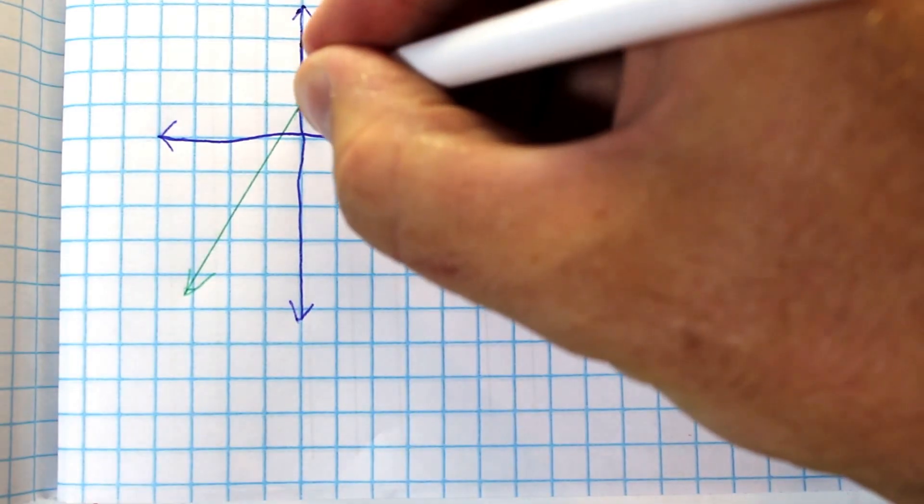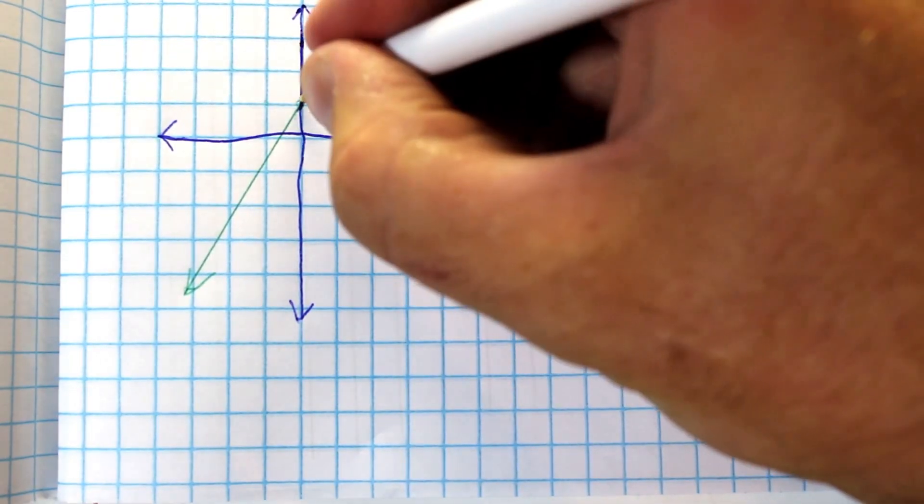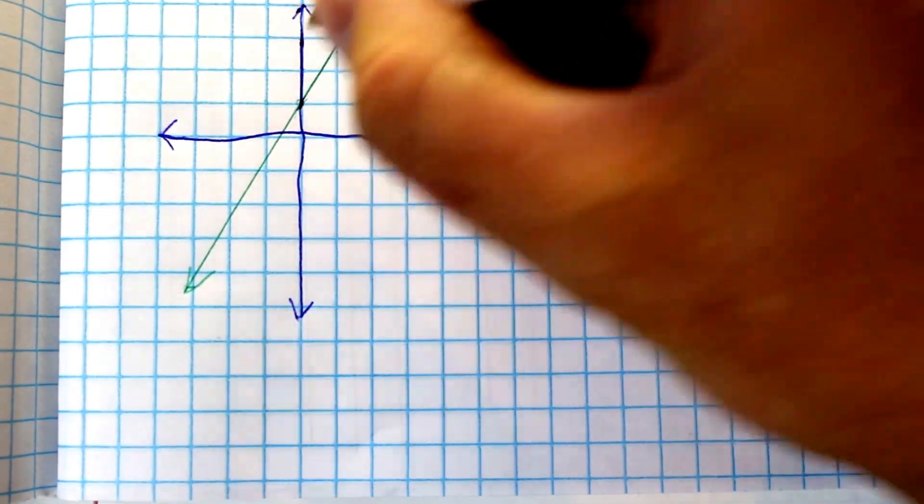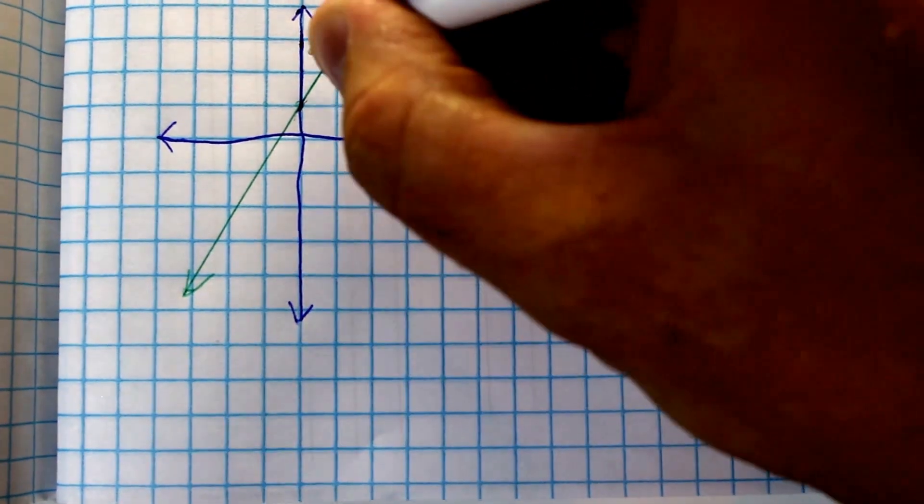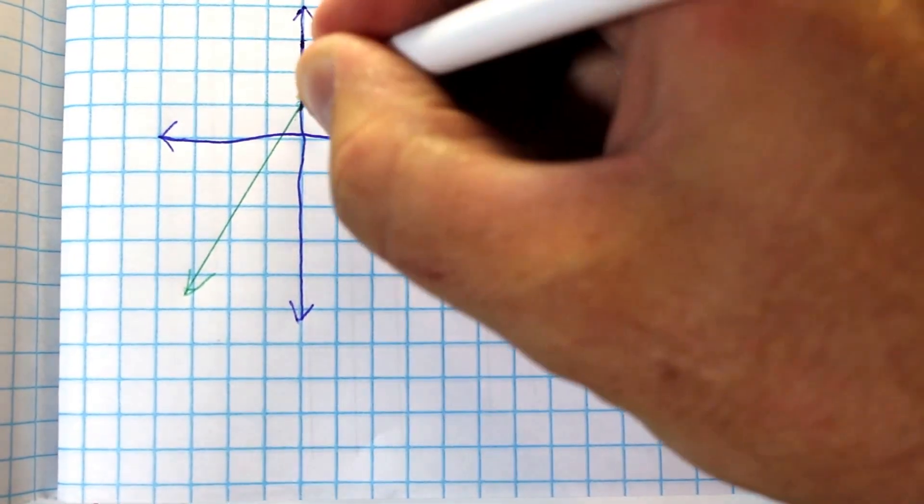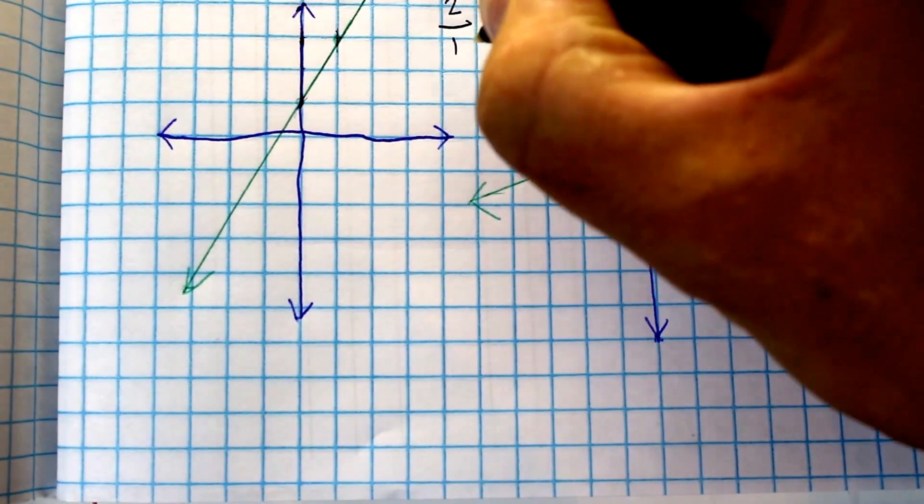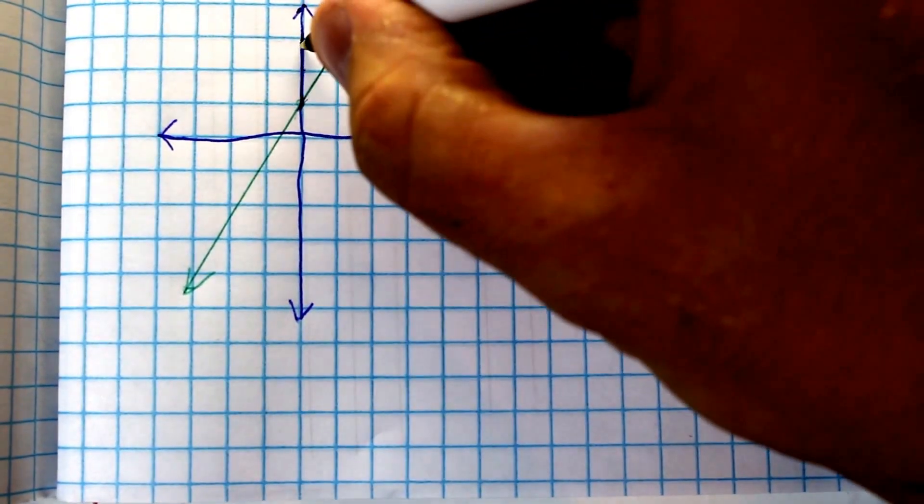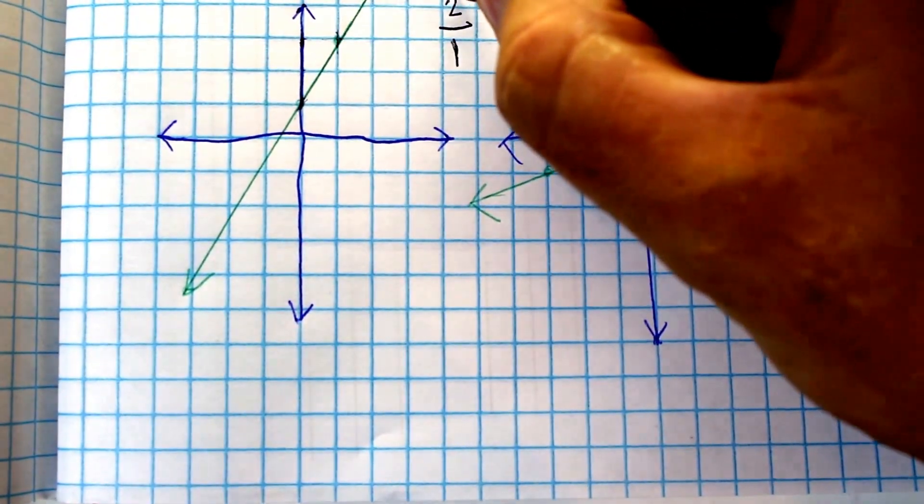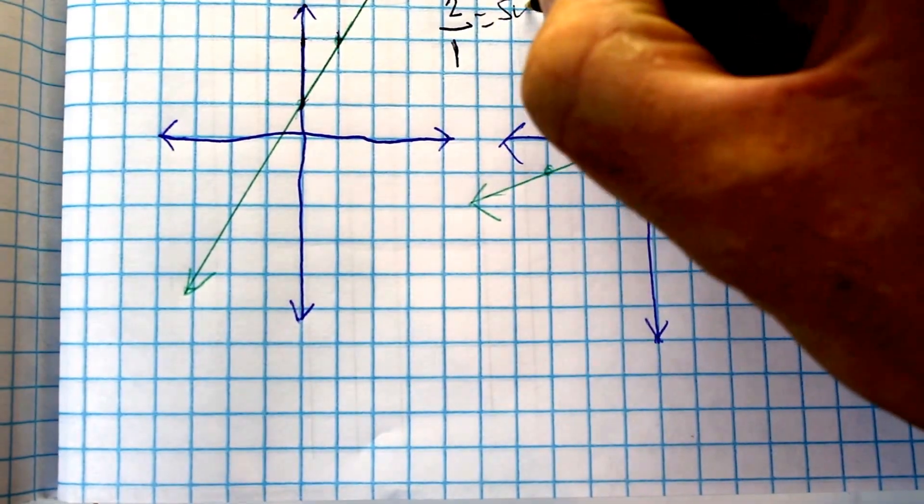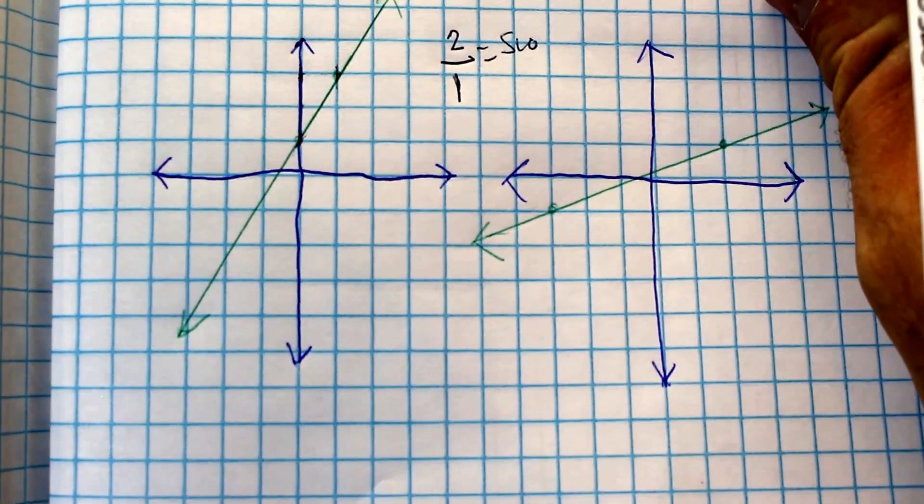So you just have to find a point where the line goes through a specific point, like here, and then you count rise up: one, two. So that's your rise. And then your run is one. So you come up two - one, two - over one. That's your rise, two, over your run, one. So that's your slope for that line.